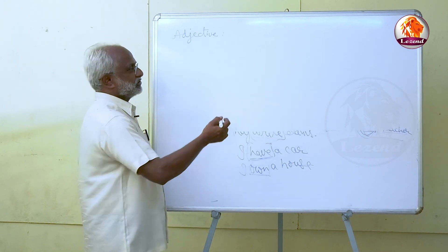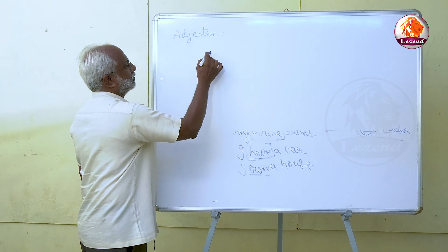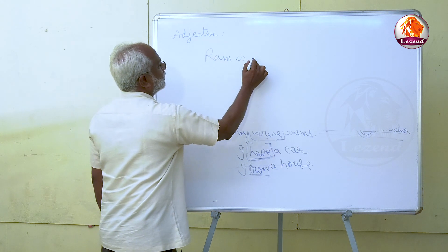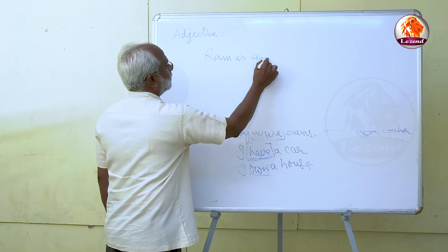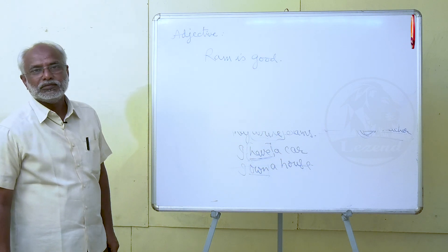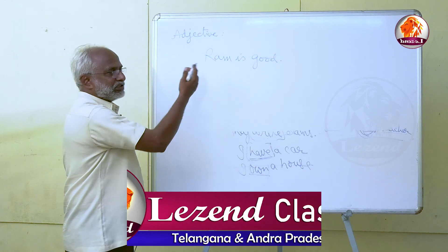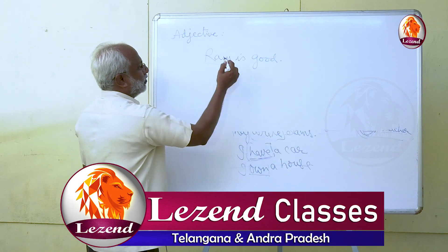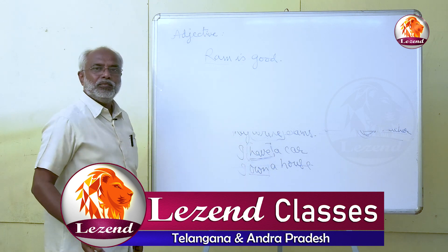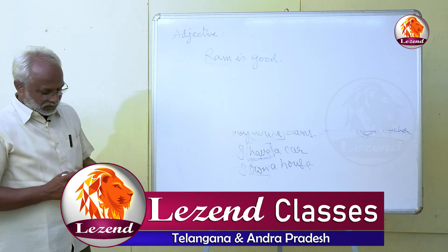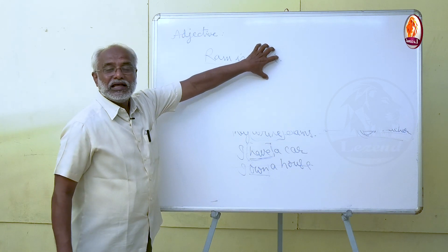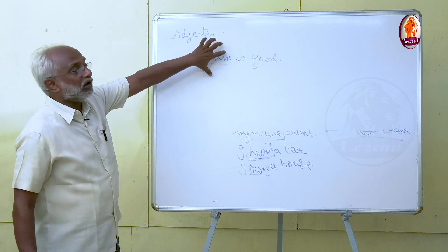Let's have some examples. Ram is good. This is a sentence. Ram is a noun, 'is' is the verb. What is 'good'? It says about the quality of a noun.